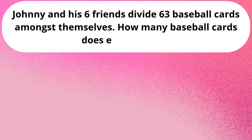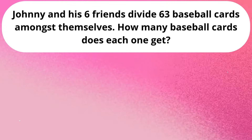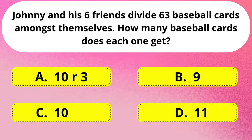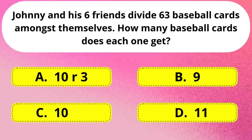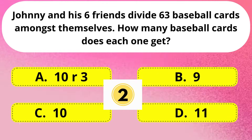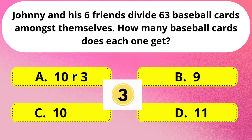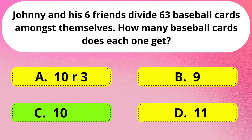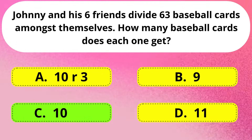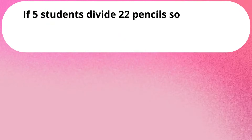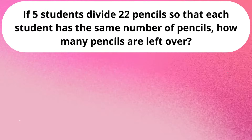Next question. Johnny and his 6 friends divide 63 baseball cards amongst themselves. How many baseball cards does each one get? Correct answer is Option C: 10.